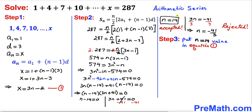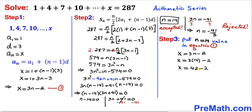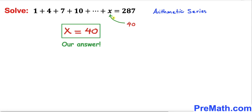For our final step, we plug n equals 14 into Equation 1: x equals 3n minus 2. Replacing n with 14 gives x equals 3 times 14 minus 2, which is 42 minus 2, so x equals 40. Thus our x value in this arithmetic series turns out to be 40, and that is our final answer.